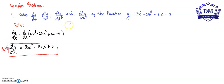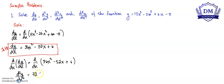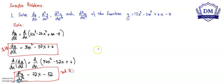To get the second differentiation, take note this is our first differentiation. The second differentiation is just the derivative of the first differentiation. So this is equal to d over dx of 36x squared minus 52x plus 6. Our second derivative, d squared y over dx squared, is equal to 72x minus 52.